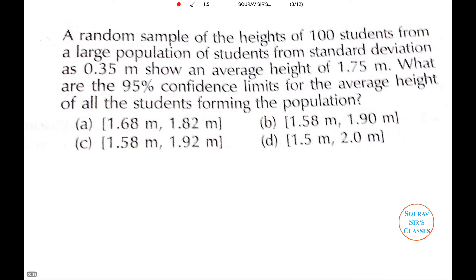Let us read the first question. The question reads as: a random sample of the height of 100 students from a large population of students from standard deviation as this shows an average height of this. What are the 95% confidence limit for the average height of all students forming the population? Here we have the standard deviation to be 0.35 whereas x̄ or the average height is given as 1.75.